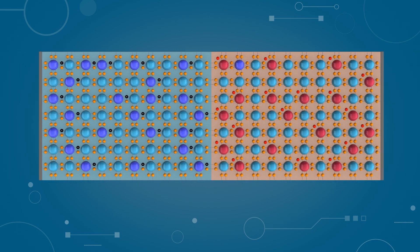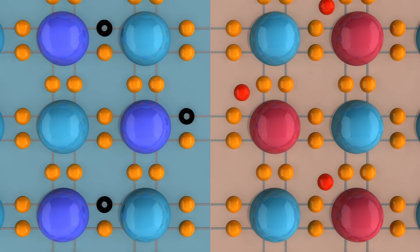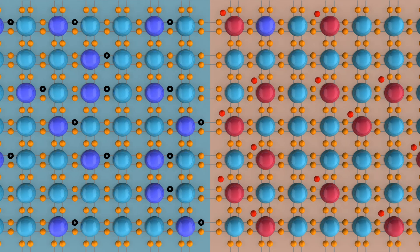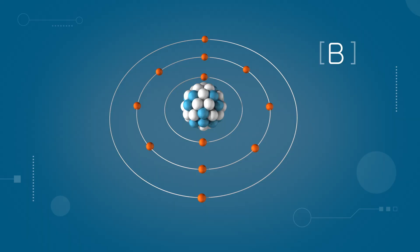Now, let's connect a P-type semiconductor with an N-type semiconductor. The P-type semiconductor contains positively charged holes, while the N-type semiconductor has free electrons. At the boundary where these two semiconductors meet, electrons are attracted to the holes and combine with them. When a neutral atom gains an electron, it becomes negatively charged. Conversely, when a neutral atom loses an electron, it becomes positively charged.